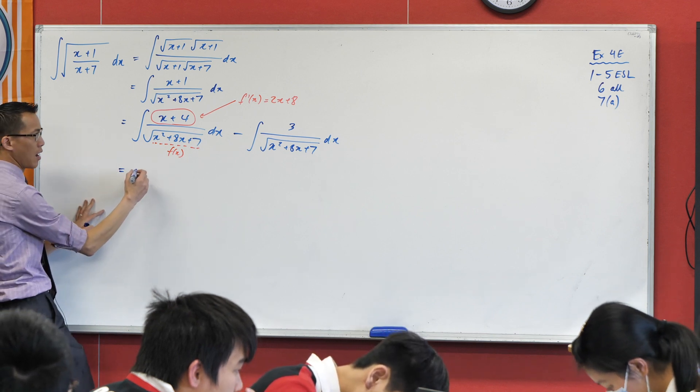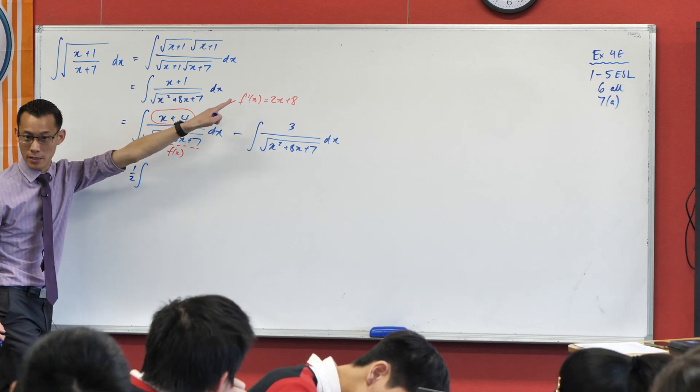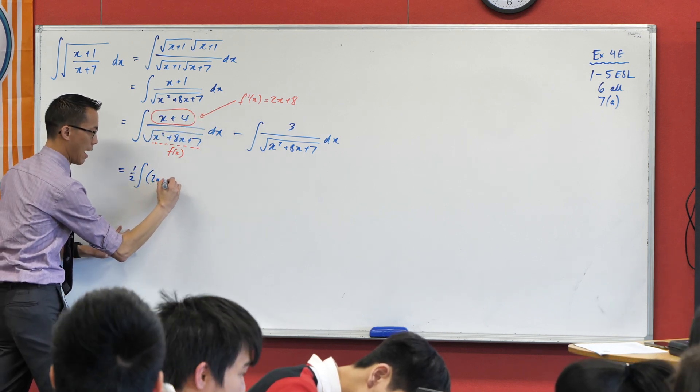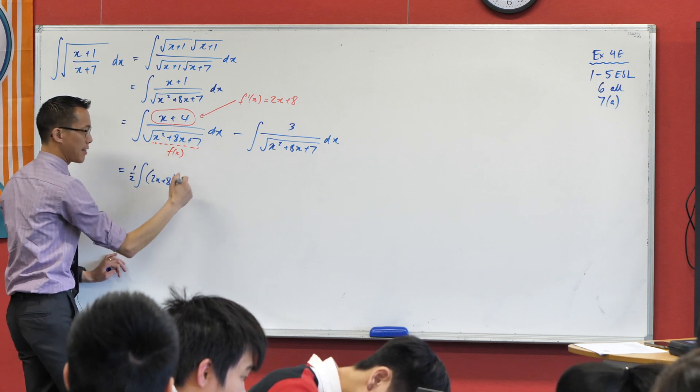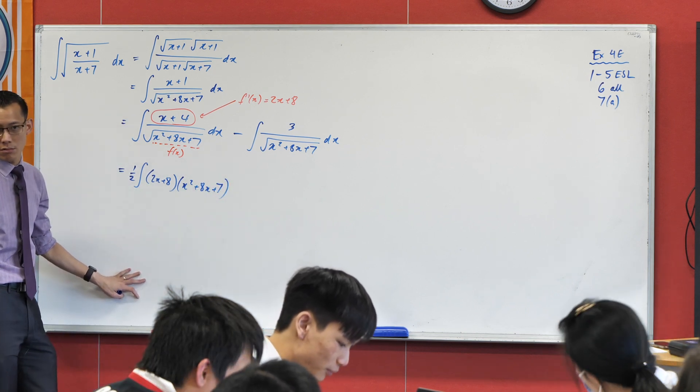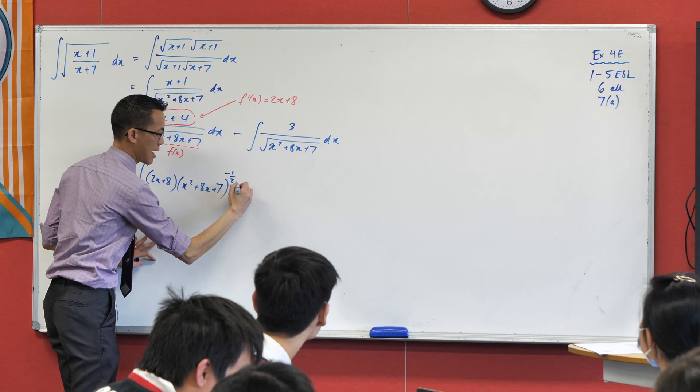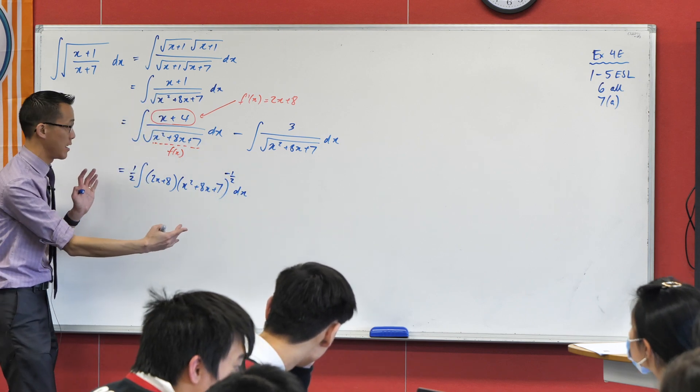So to make it more obvious, I'm going to pull out a factor of a half to get my 2x plus 8, which I actually want. And then just to make it, just to have a few less things going on in my brain, I'm going to write this in index form. What is the appropriate index? Negative a half, negative a half, thank you. So that is with respect to x. Can you see I've set it up for reverse chain rule, right? Okay.